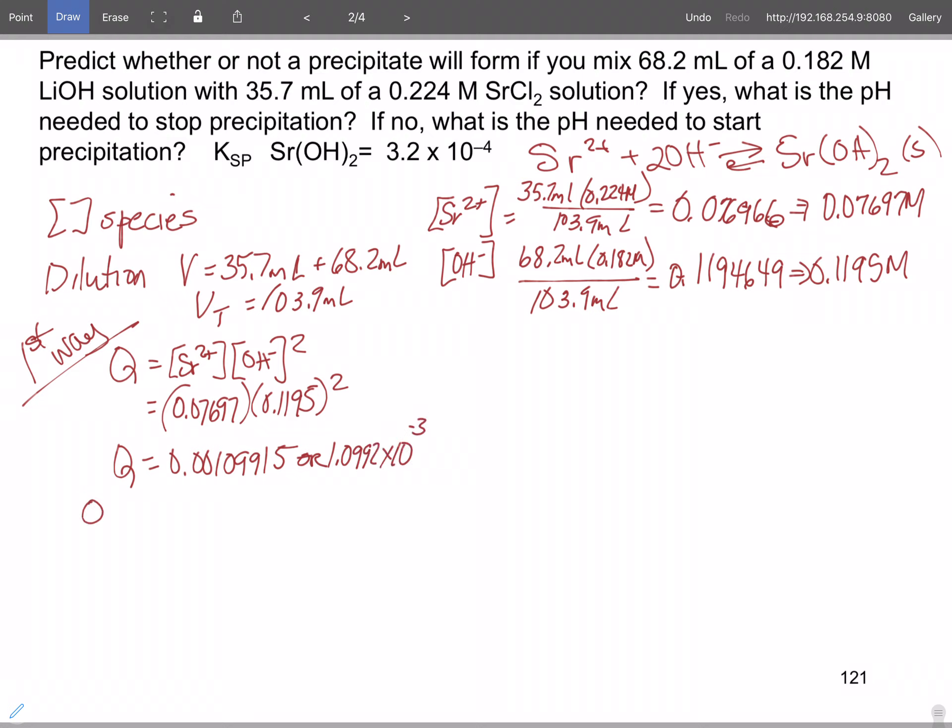So when you look at Q with respect to K, K is 3.2 times 10 to the minus 4. Q is 1.0992 times 10 to the minus 3. So Q is greater than K, so precipitation forms.